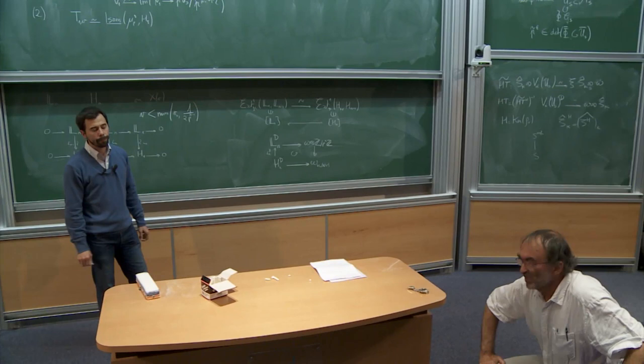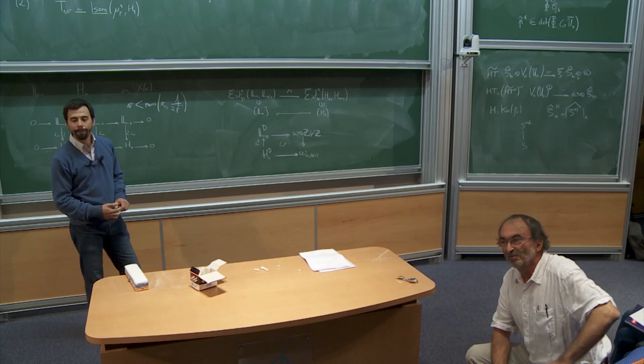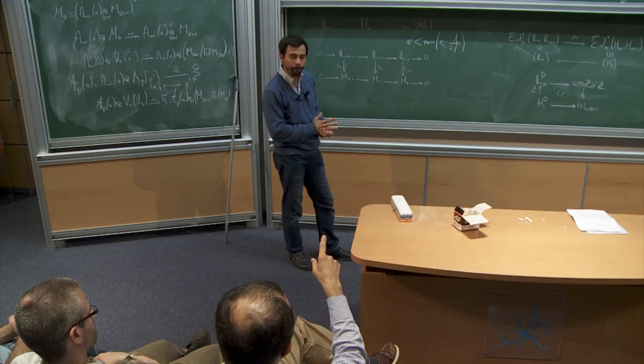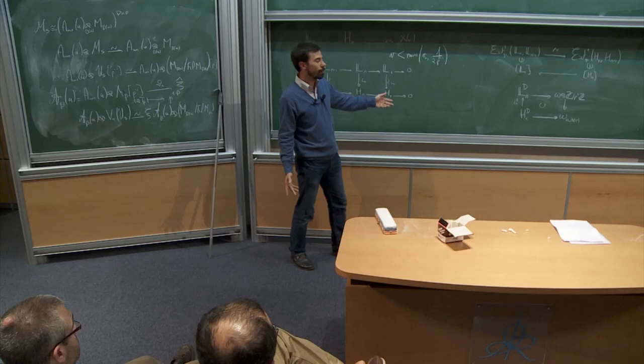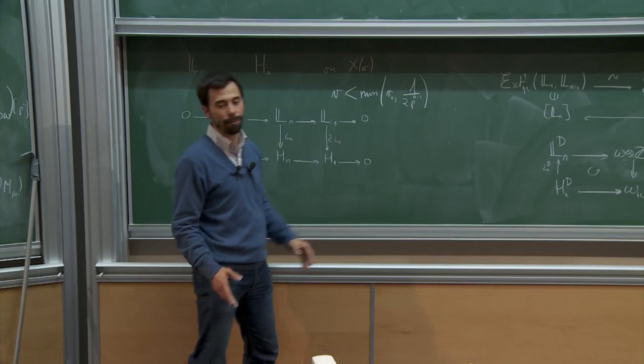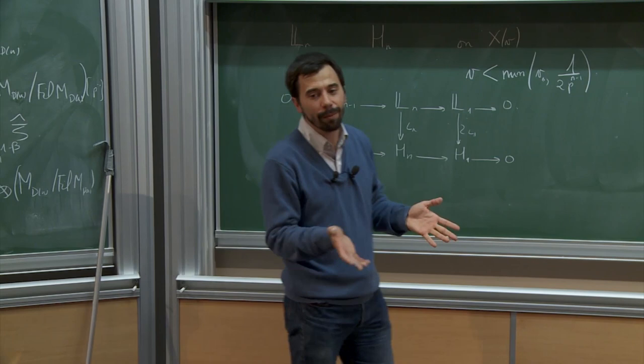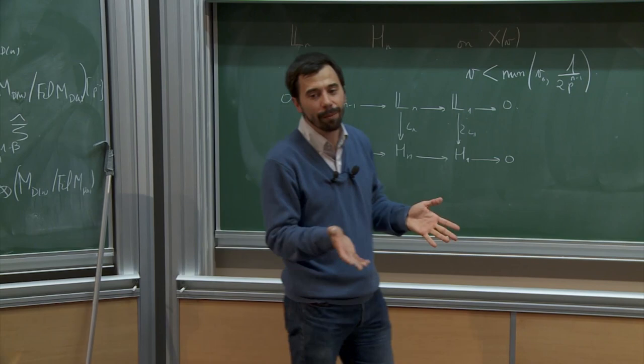Any questions? In the analytic continuation argument, where do you see that you have to shrink the radius? Because the radius is getting smaller and smaller. Both objects have to be defined: L_n must be defined so v must be less than v_0, and the canonical subgroup requires v less than 1/(2p^(n-1)). So it is by definition — we simply compare two objects that are both defined on the same region.